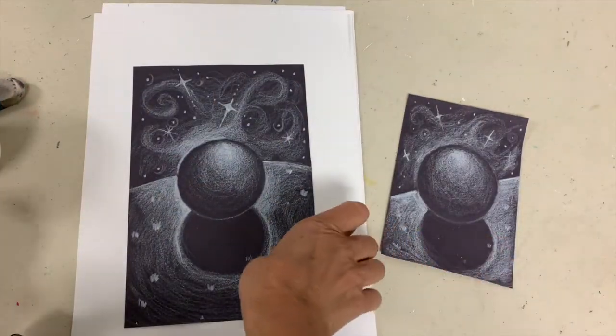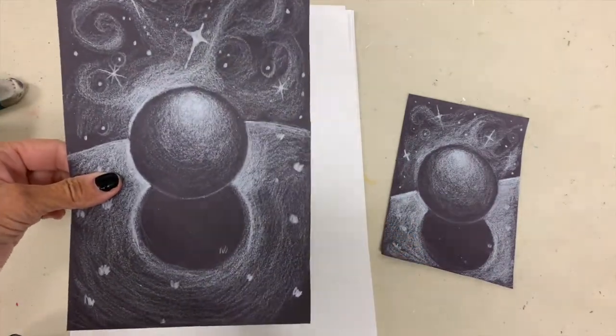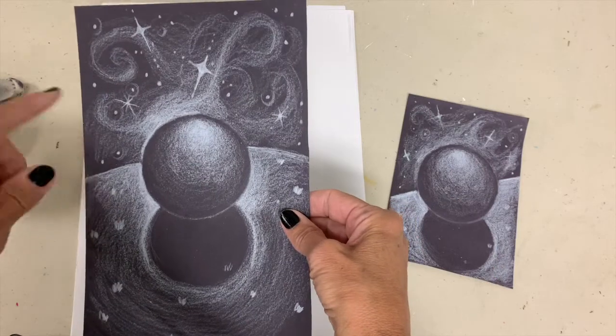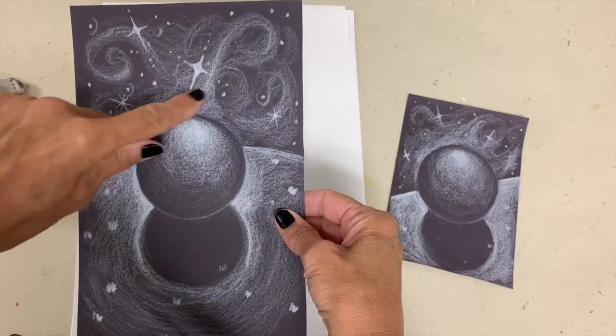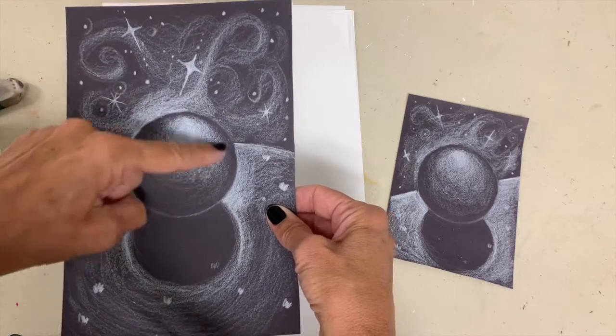So there you have it. You have a sphere that was created through highlighting. If you noticed, when you start to really highlight the background, it makes the sphere, the edge of it, look a lot darker, as long as you didn't color the whole sphere in white.